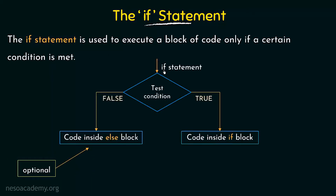Let's see the flow of control. In the if statement, we have a test condition. If the test condition is true, then there will be a block of code inside the if block that will be executed. If the test condition is not true — that means if it is false — then the code inside the else block will be executed. If the condition is not met, we write an else and execute what is written inside the else block.